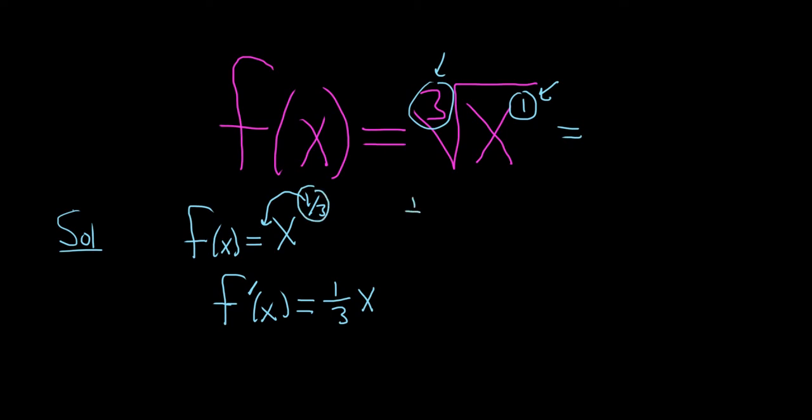So you would do 1 third. Usually you do it mentally, but I'll show the work. 1 third minus 1. And so that's really 1 third minus 3 thirds. So now we can subtract them. So 1 minus 3 is negative 2, so you get negative 2 thirds.